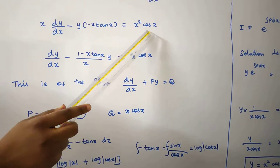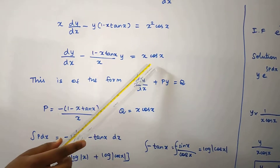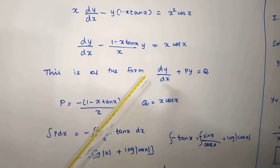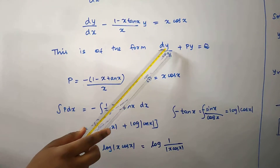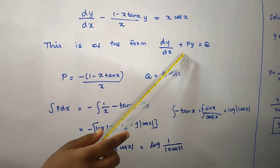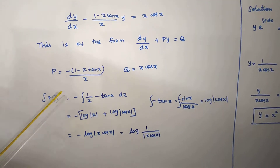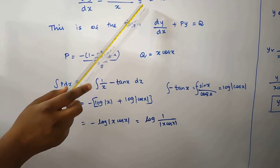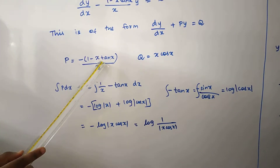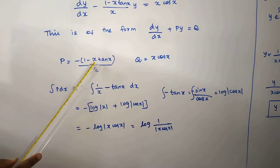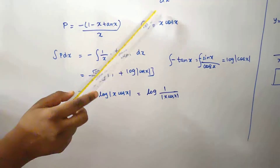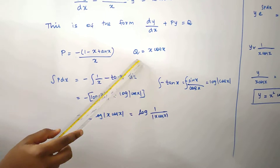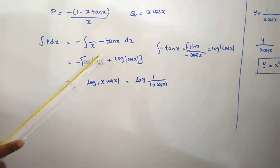Here x² divided by x gives x·cos(x). This is a linear equation in y of the form dy/dx plus P·y equal to Q. So the coefficient of y, that is P, is equal to minus (1 minus x·tan(x)) by x, and Q is equal to x·cos(x).